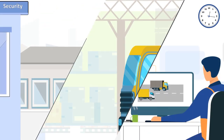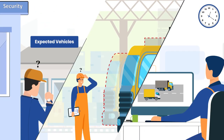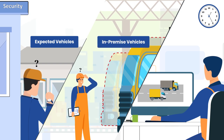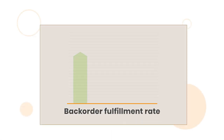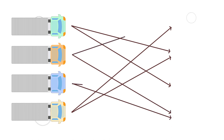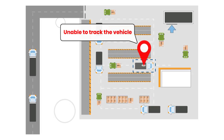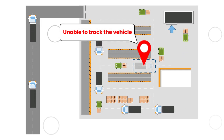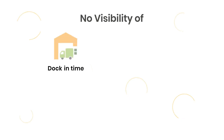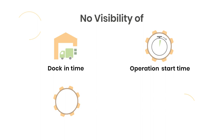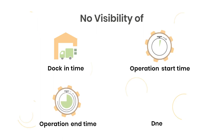Lack of visibility of expected vehicles, in-premise vehicles, and delayed vehicles. No visibility of back-order fulfillment rate. No visibility and prioritization of cross-dock vehicles. Unable to track the current location of the vehicle in the warehouse. No visibility of dock operations in terms of dock-in time, operation start time, operation end time, and dock-out time.